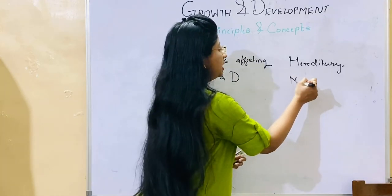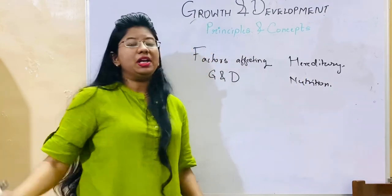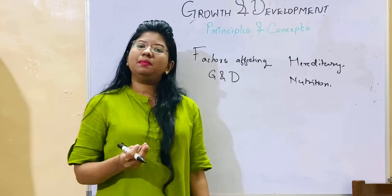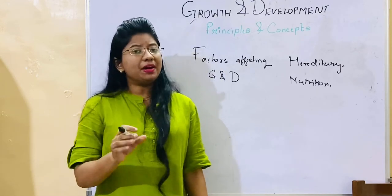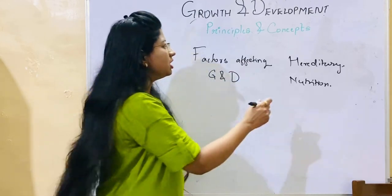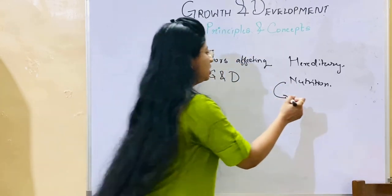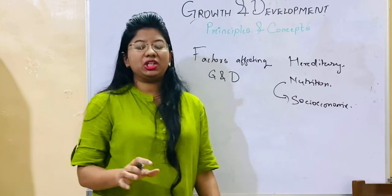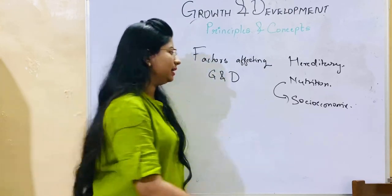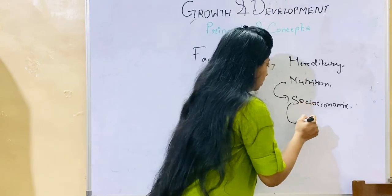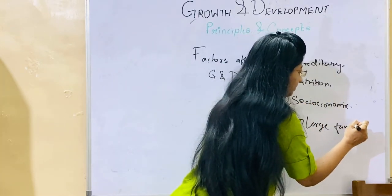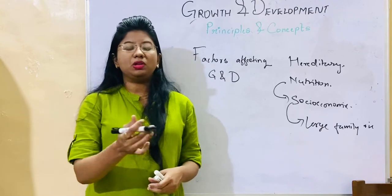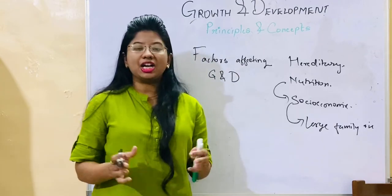The second factor is nutrition. If you do not get the correct nutrition — correct proteins, appropriate carbohydrates — there will be nutritional deficiency which will affect growth. Nutritional deficiency is also connected with socioeconomic status. If a family is not well-to-do and cannot feed their children appropriately, then growth will be affected. It is also connected to large family size, where it becomes difficult for parents to look after the growth of each and every child.